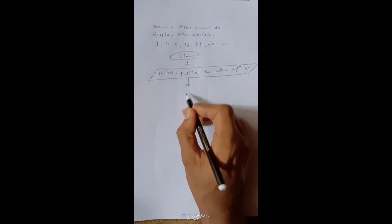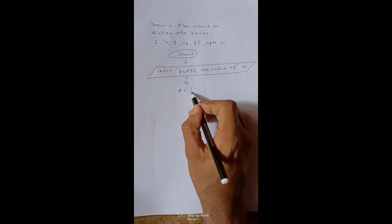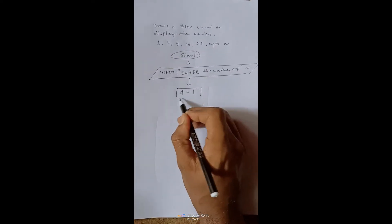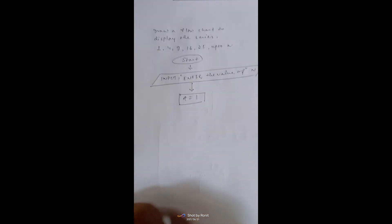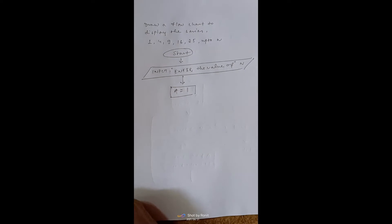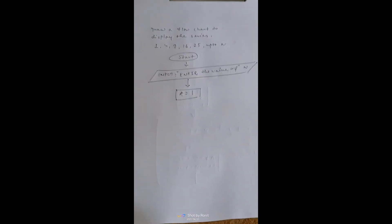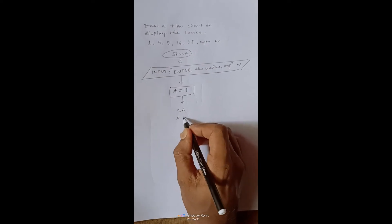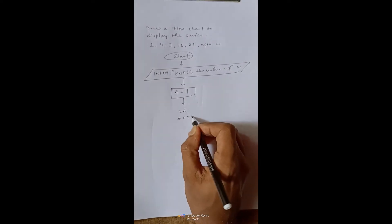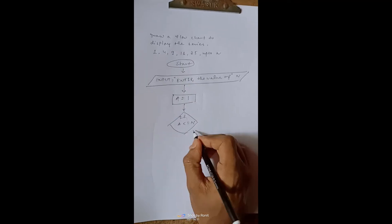Now we will store our first term to a variable, say a. What is our first term? It is 1. We will check whether it is less than n or not, if a less than or equal to n.